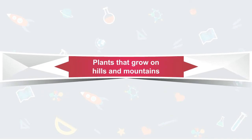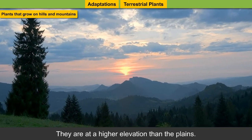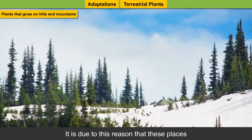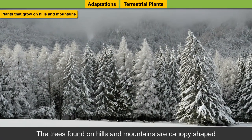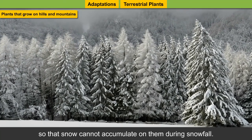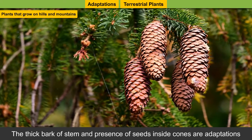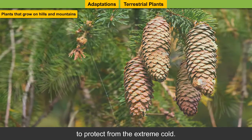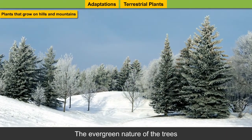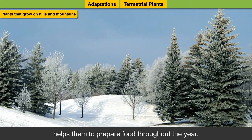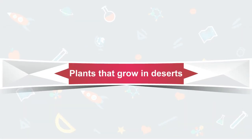Plants that grow on hills and mountains: The land on hills and mountains is of the sloping type, at a higher elevation than the plains. It is due to this that these places have low temperature accompanied by strong winds. The trees are canopy-shaped so that snow cannot accumulate on them during snowfall. The thick bark of the stem and presence of seeds inside cones protect from extreme cold. The leaves are needle-shaped with thick waxy surfaces to reduce water loss, and the evergreen nature of the trees helps them prepare food throughout the year. Pine, spruce, oak, and maple are trees that grow in mountains.